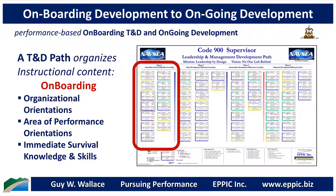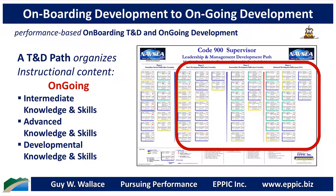The training path organizes instructional content for onboarding, including organizational orientations and orientations to the performance itself — which I call areas of performance, also known as major duties, key results areas, accomplishments, etc. The last part of onboarding addresses the immediate survival knowledge and skills required by the target audiences as they take the job. The training and development path then goes into ongoing development: intermediate knowledge and skills, advanced knowledge and skills, and then developmental knowledge and skills for the next probable job assignment.